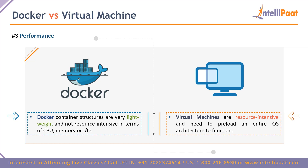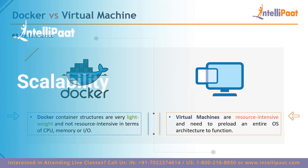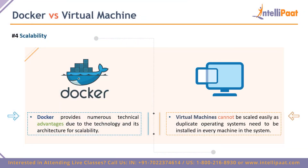Regarding performance, Docker is designed to be very lightweight. It is not resource-intensive in terms of memory, I/O, or CPU usage. Virtual machines, on the other hand, are very resource-intensive — as you may have experienced if you've tried running Ubuntu inside Windows. They consume significant memory and CPU because you have to preload an entire operating system on top of one that's already running.